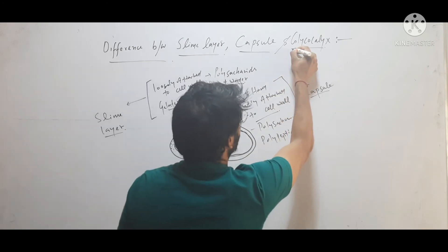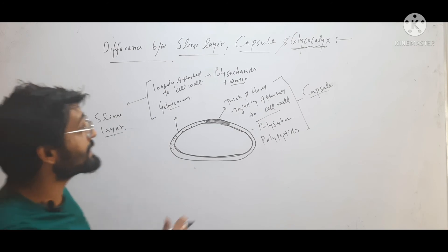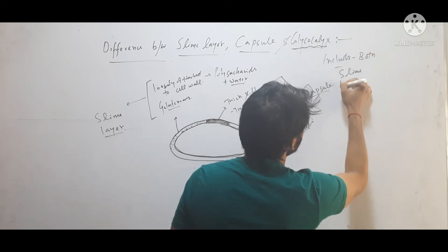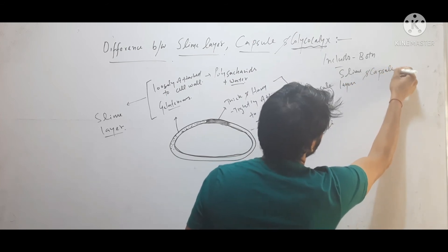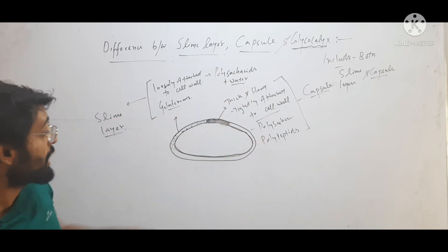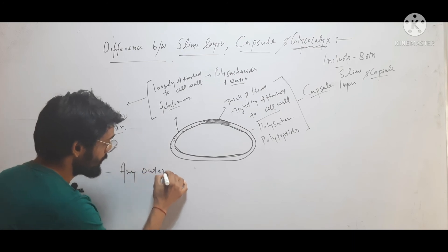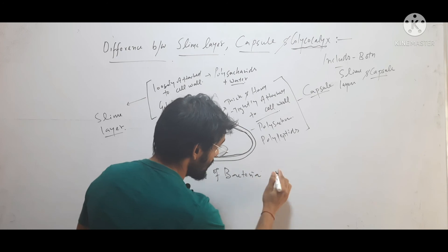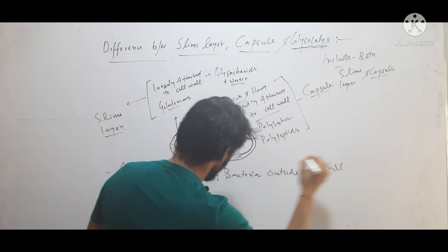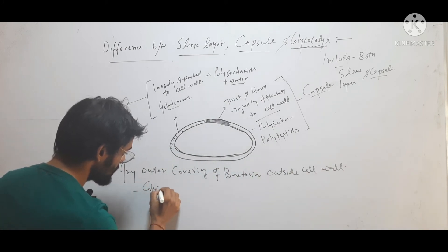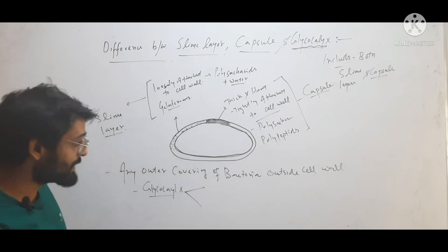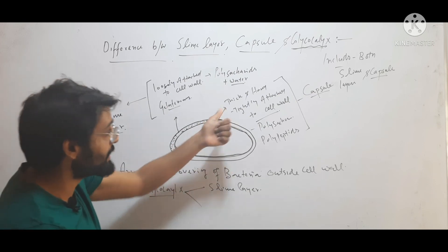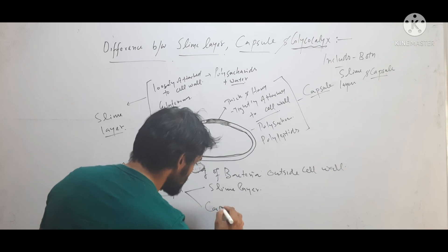And now the third term is glycocalyx. Glycocalyx is a broad term that includes both slime layer and capsule. Any outer covering outside the cell wall is called glycocalyx. If this outer covering is gelatinous and thin, then it is called slime layer specifically. And if this outer covering is hard and thick and tightly attached to the cell wall, then it is called capsule.